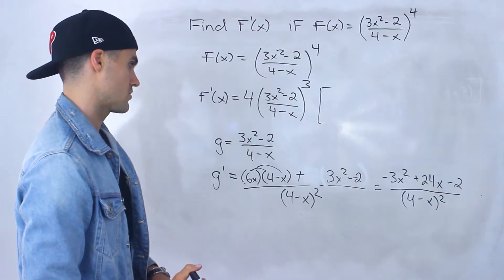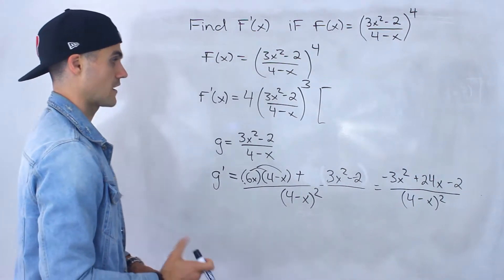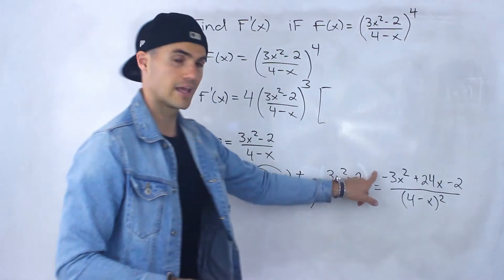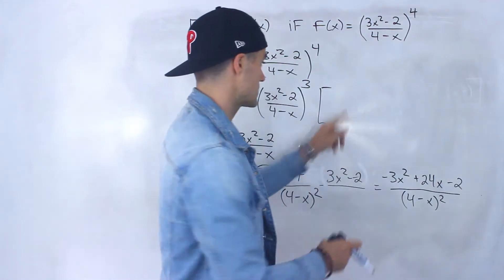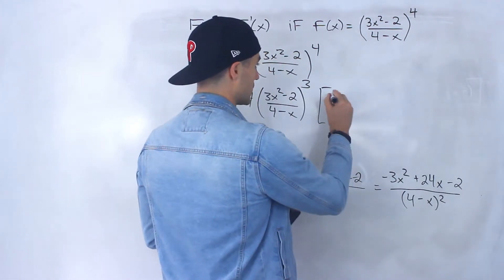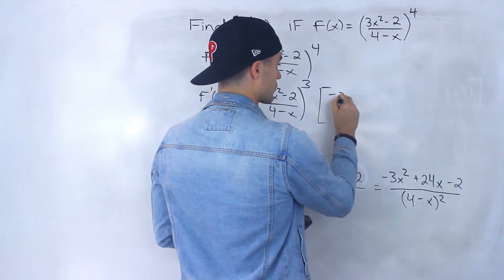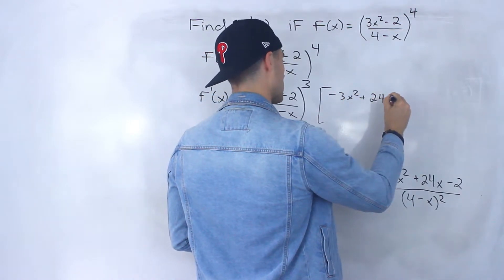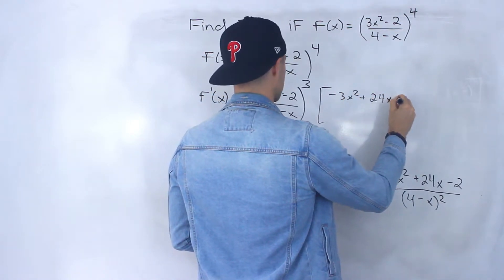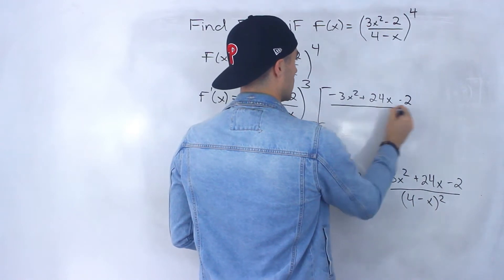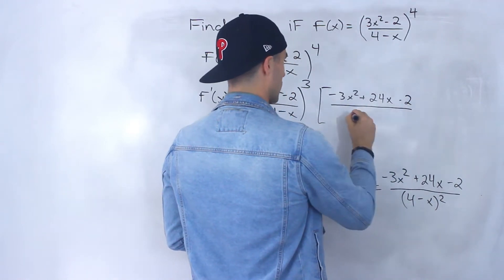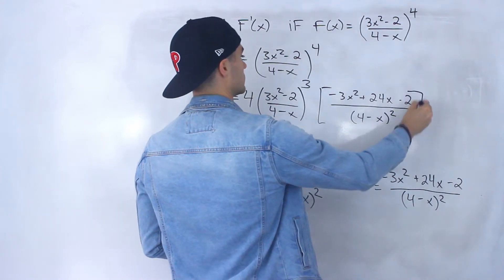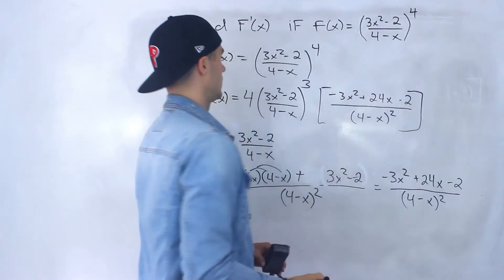Let me just make sure everything looks good — yes, it looks fine. So the derivative of the inside function is this. I'm going to take this and rewrite it up here: negative 3x squared plus 24x minus 2, all over 4 minus x squared.